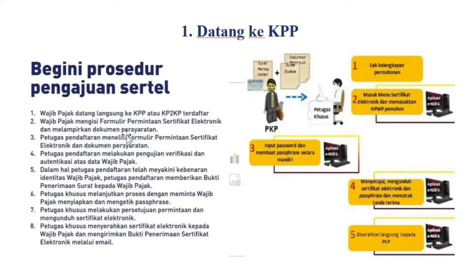Kedua, wajib pajak mengisi formulir permintaan sertifikat elektronik dan melampirkan dokumen persyaratan — biasanya mengisi formulir di TPT. Berikutnya, petugas pendaftaran di TPT akan meneliti formulir permintaan sertifikat elektronik dan dokumen persyaratan. Menurut peraturan, yang datang harus penanggung jawab atas PKP tersebut — kalau badan biasanya direktur, kalau orang pribadi yang bersangkutan PKP-nya.